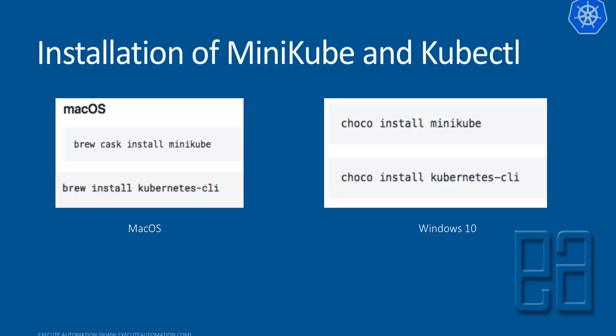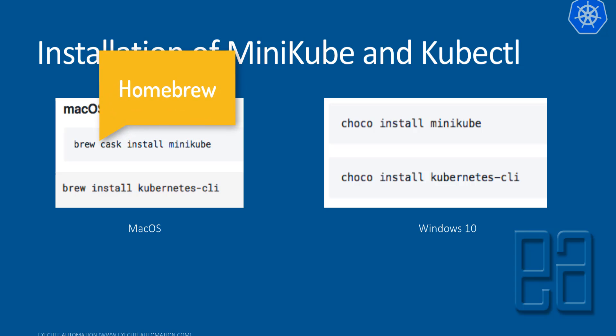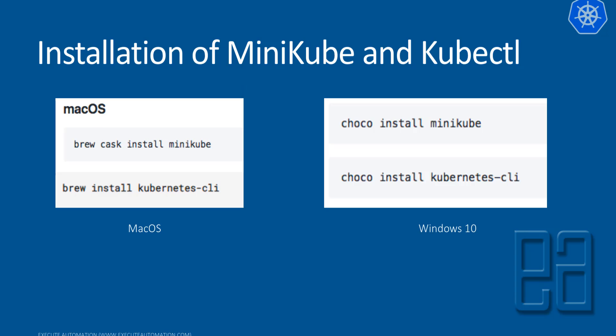For Windows users, you can install what is called as Chocolatey. Using Chocolatey, you can install Minikube and then run choco install kubernetes-cli. For Mac OS, you need to have Homebrew software installed within your operating system. We have already discussed about this in many of my videos, but I will quickly show you how to get Homebrew installed on your Mac OS.